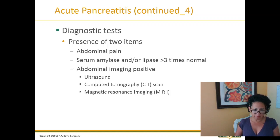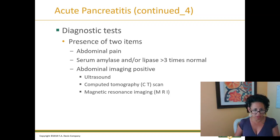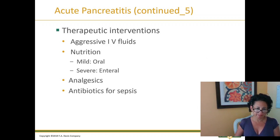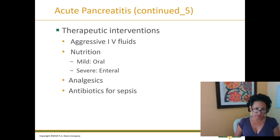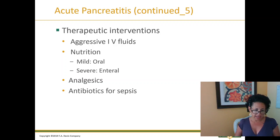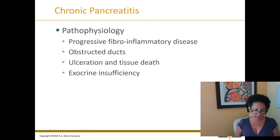Diagnostic testing: look for presence of two items — abdominal pain or serum amylase greater than three times the normal limit, and positive abdominal imaging. Interventions include aggressive IV fluids, nutritional supplementation ranging from mild to severe, analgesics, and antibiotics for sepsis, which can cause death.